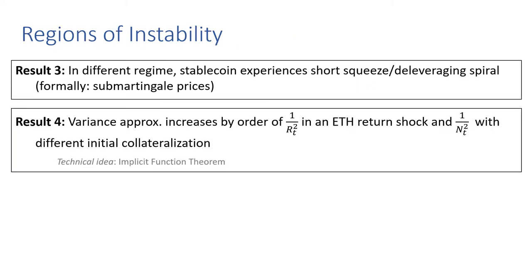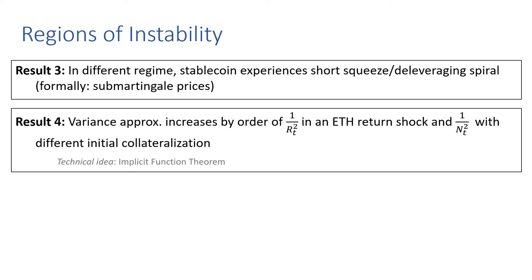We can relate this process to an increase in variance as well. We show that in approximation, variance increases by an inverse square of the size of an ETH return shock — meaning a higher return shock causes much higher variance increase in the stablecoin price. We make this more concrete by formally showing that the unstable regime has distinctly higher forward-looking price variance compared to the stable regime, suggesting these labels are well interpreted as such.